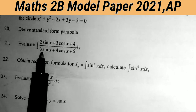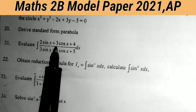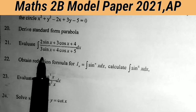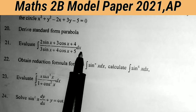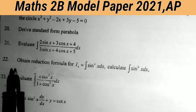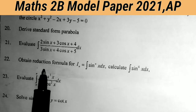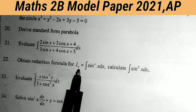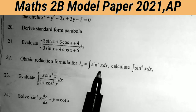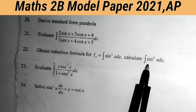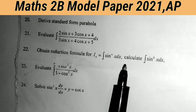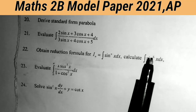Twenty-first question: evaluate the integral of (2sinx + 3cosx + 4)/(3sinx + 4cosx + 5) dx. Most important model. Twenty-second question: obtain the reduction formula for Iₙ = ∫sinⁿx dx and hence calculate ∫sin⁶x dx. Very very very important sum.